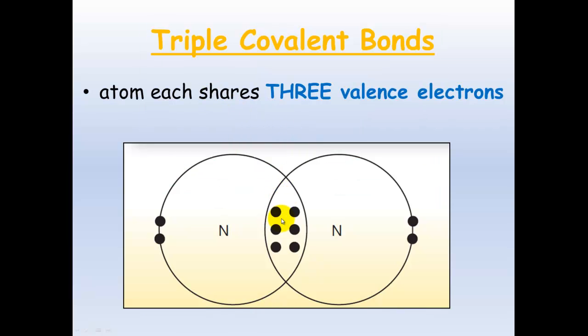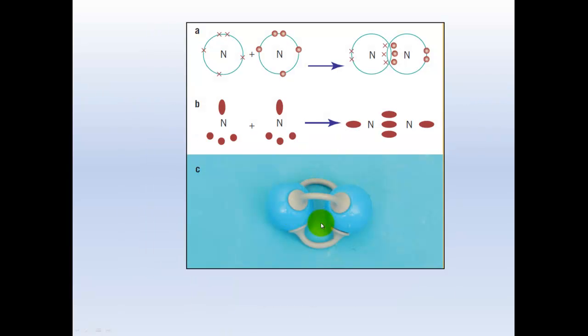Triple covalent bonds: each atom shares three valence electrons, as can be seen here. These are even closer together because now you've got six electrons between those two nuclei, which is really strong electrostatic attraction.